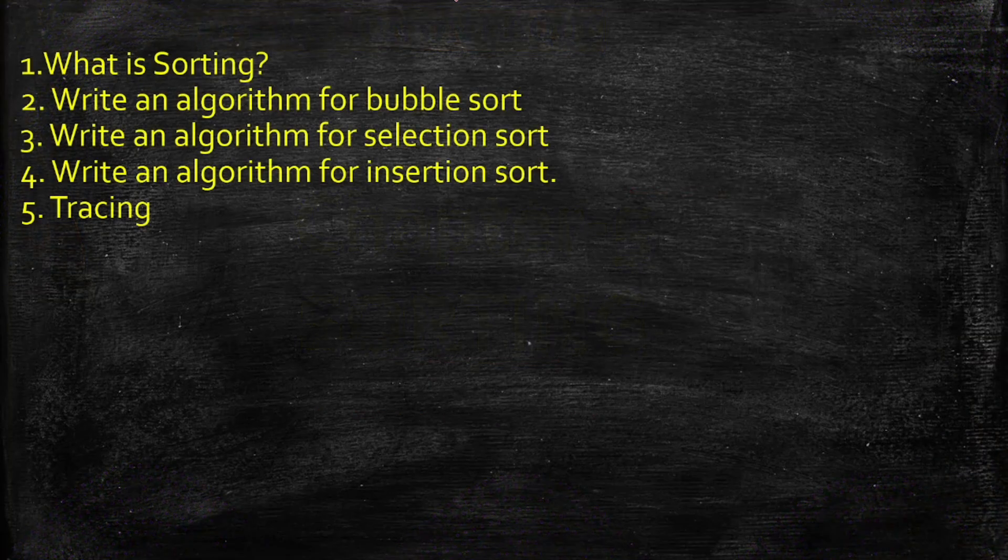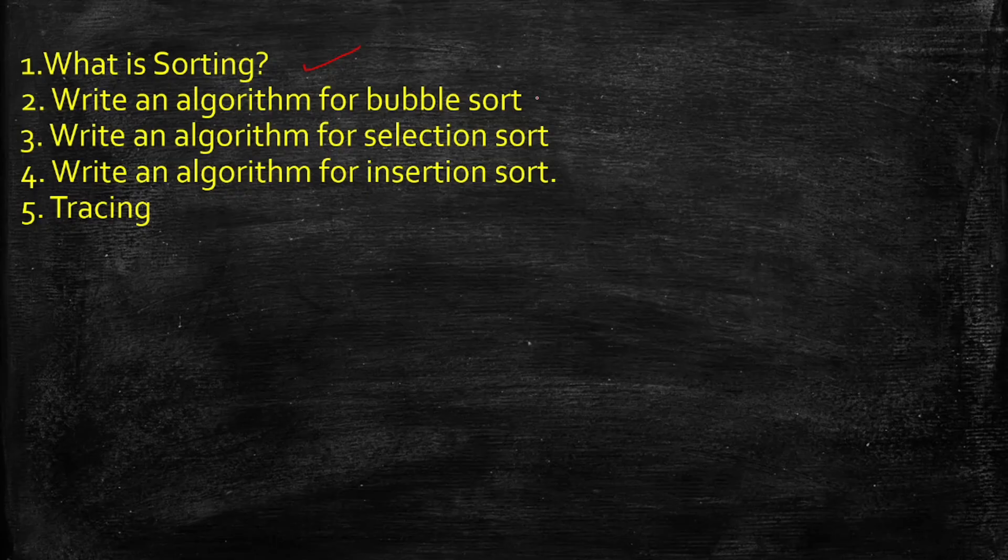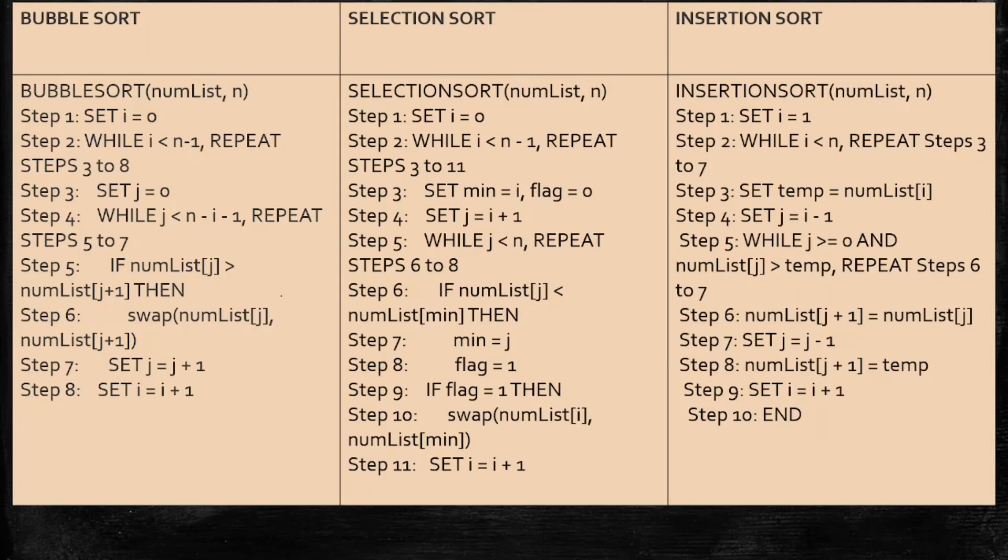Chapter 5, what are the important questions? Sorting. Definitely you will get selection sort and insertion sort, either the algorithm or tracing for the 5 marker. And bubble sort also, make for the 3 marker. You can see here the bubble sort, selection sort and insertion sort algorithm.